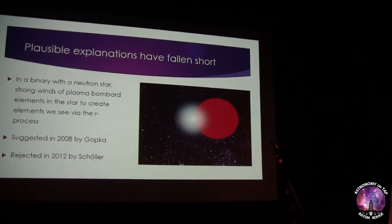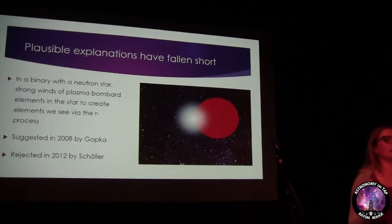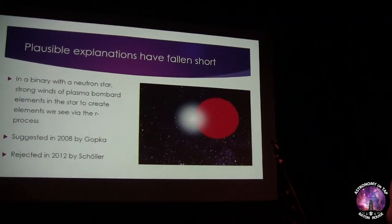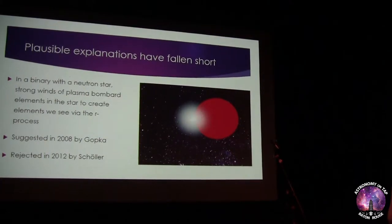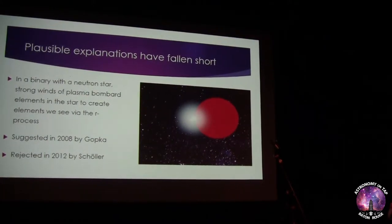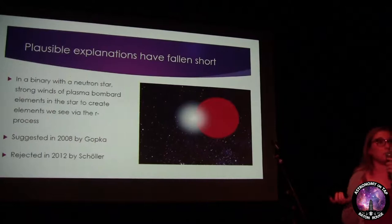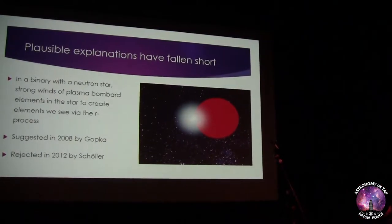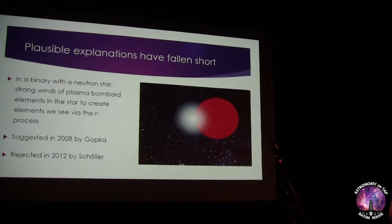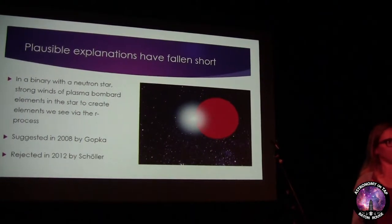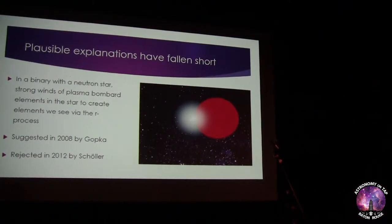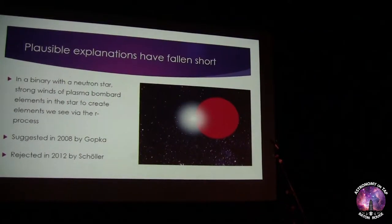Gopka, who also found some of those elements in 2008, proposed this idea to explain where the short-lived isotopes were coming from. It was a good idea for four years, until Scholler investigated whether there actually is a binary companion to Chbilsky's star. The answer is no — Scholler did an in-depth investigation and discovered there's nothing within a thousand astronomical units of Chbilsky's star. This isn't going to work.